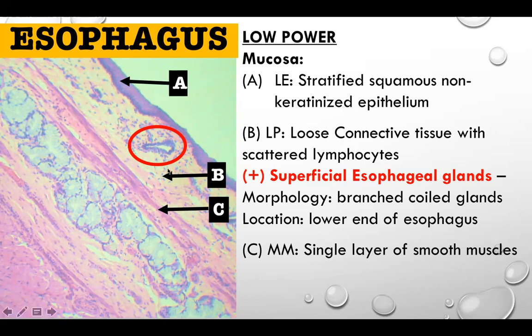In the lamina propria, if asked to identify the fundamental type of tissue, the answer is connective tissue. A subtype would be lymphatic tissue, specifically loose lymphatic tissue. If the specific subtype is connective tissue proper, it is also loose connective tissue. Letter C, the muscularis mucosa, is a single layer of smooth muscle that also divides the lamina propria from the submucosa.